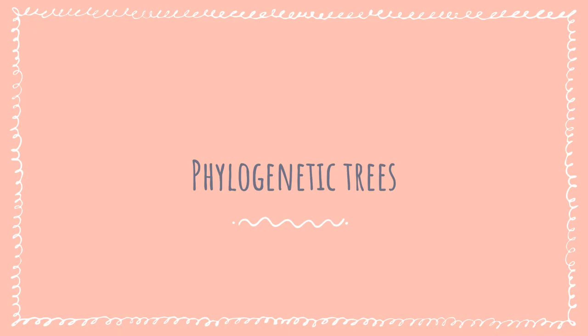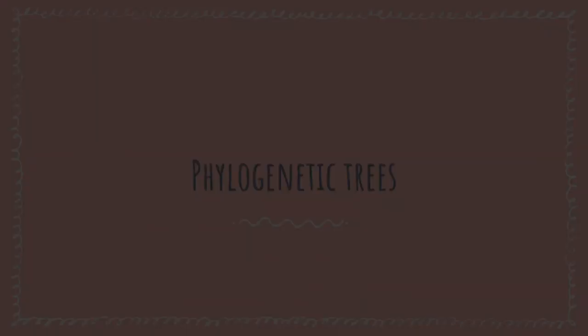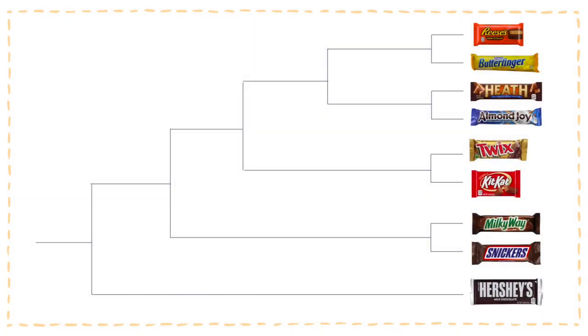In this video, we will be demonstrating the evolutionary change of chocolate bars using a rooted tree. A rooted tree shows the order in which the chocolate bar species diverged. Our tree represents two types of evolutionary change: anagenesis and cladogenesis.